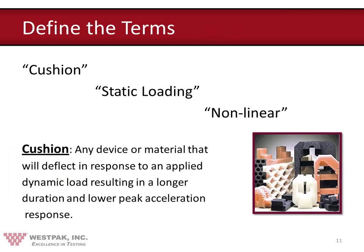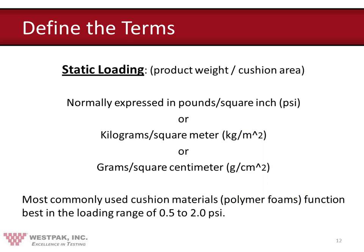Before we start the process, it's necessary to define some key terms: cushion, static loading, and linear versus nonlinear. A cushion is simply a device that deflects in response to an applied dynamic load — it can work in compression, tension, torsion, or shear. Don't think a cushion has to be a piece of foam; it can be almost anything. Static loading is simply weight divided by area, normally expressed in pounds per square inch (PSI) or grams per square centimeter.